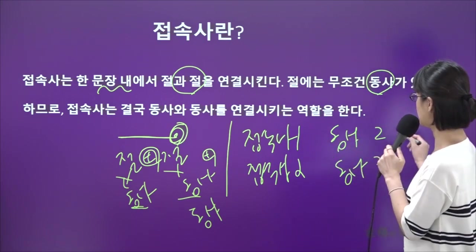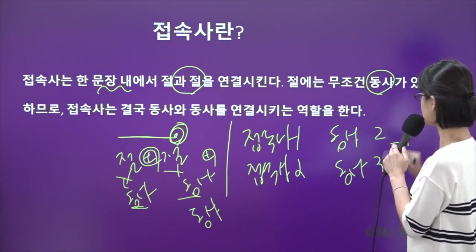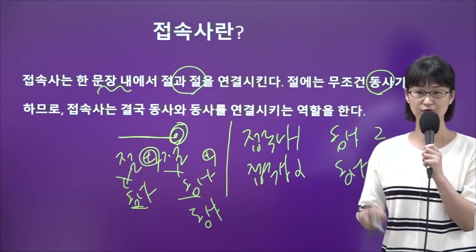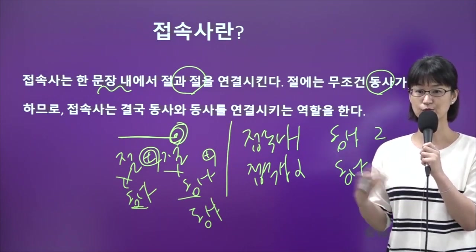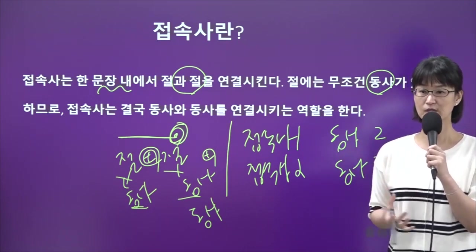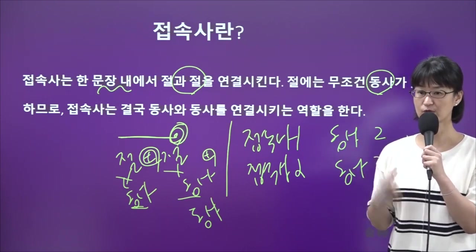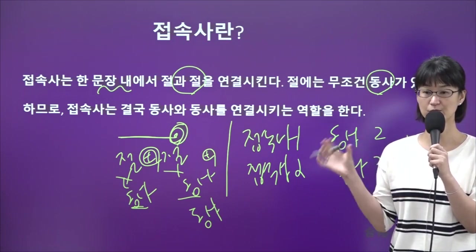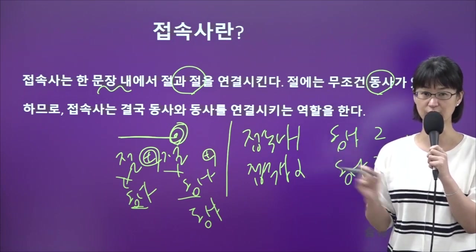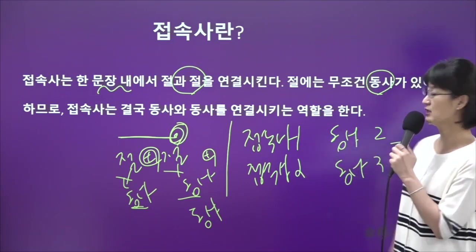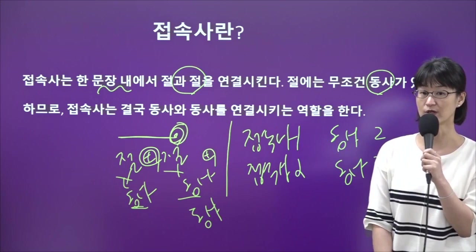접속사의 개수는 동사의 개수 마이너스 1이에요. 문장에서 접속사 관련 문제를 풀 때는 동사의 개수에 맞춰서 접속사가 필요한지 필요하지 않은지를 결정해야 되기 때문에 이 개수는 계산할 수 있어야 됩니다.